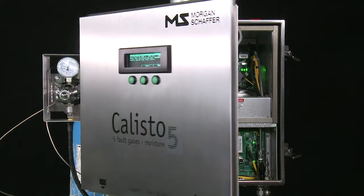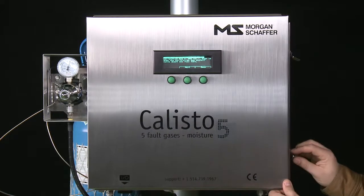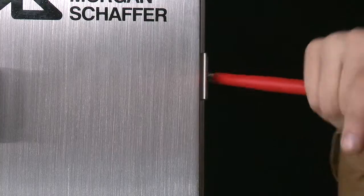Close the Callisto door. Fully tighten the door latches to prevent water ingress and then press Next.